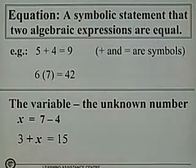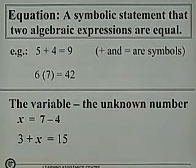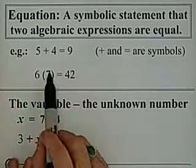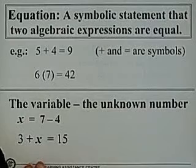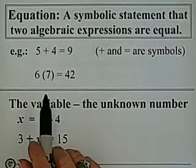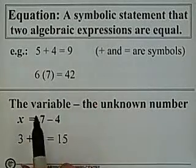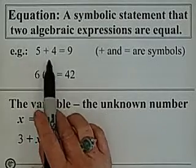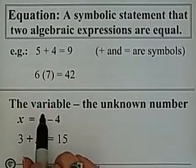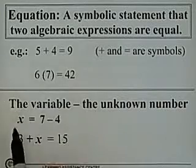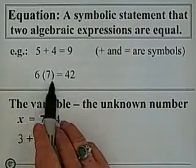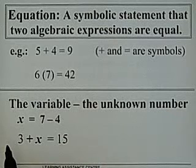An equation is a symbolic statement that two algebraic expressions are equal. So if we look at this — 5 plus 4 equals 9 — these are symbolic statements; the plus and the equals are both symbols. And we know that 5 plus 4 equals 9. This is an expression that is equal. The same with 6 times 7 equals 42.